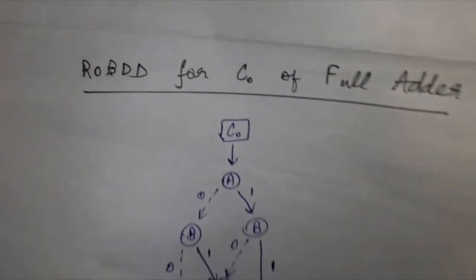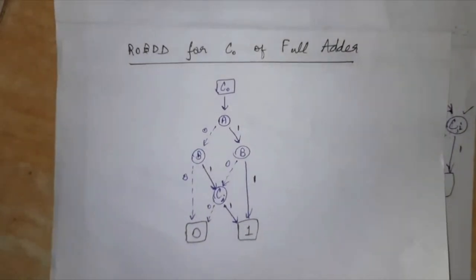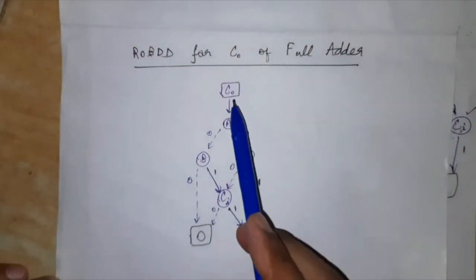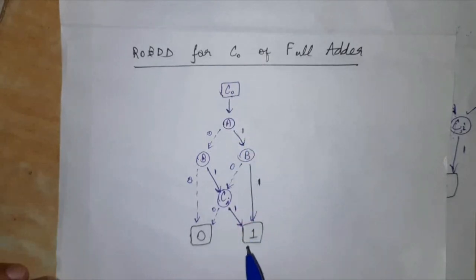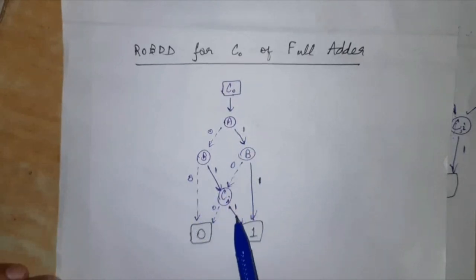I hope you could have solved this out of the full adder. And if you want to cross check, I am just giving out here the ROBDD of full adder for the output C, that is C out carry output. So this is the ROBDD obtained. You can cross check it.